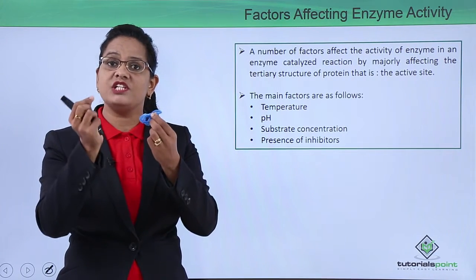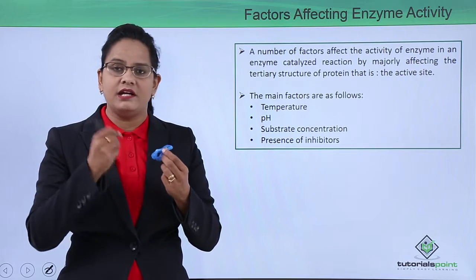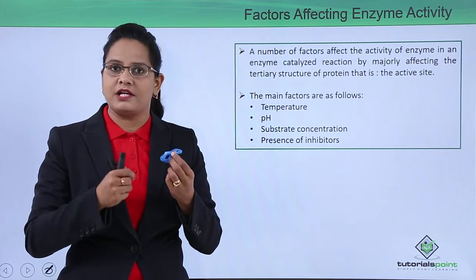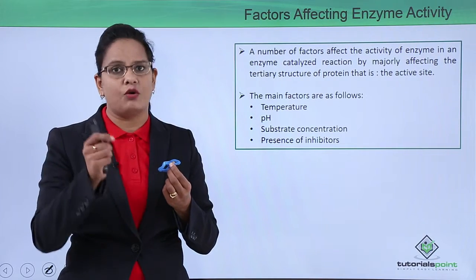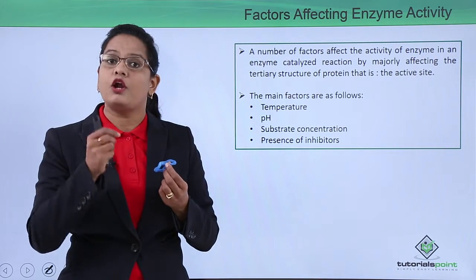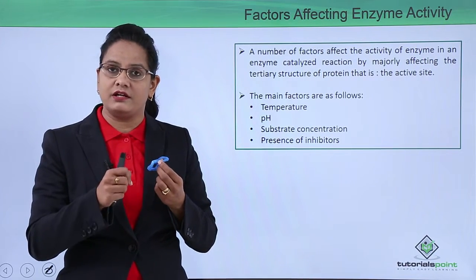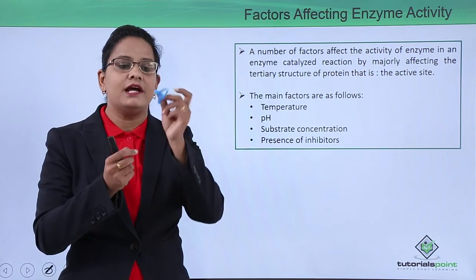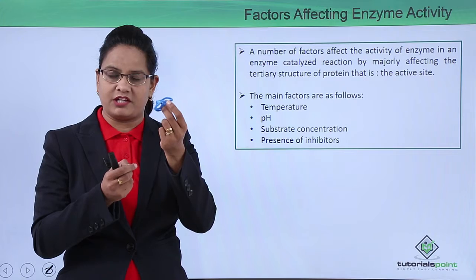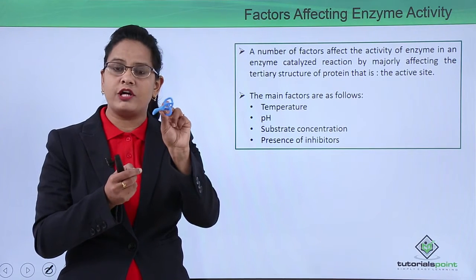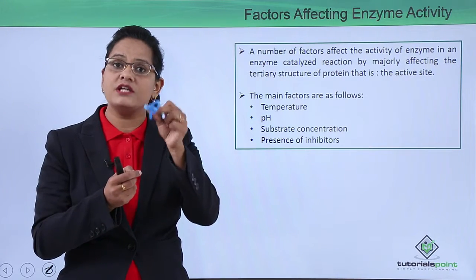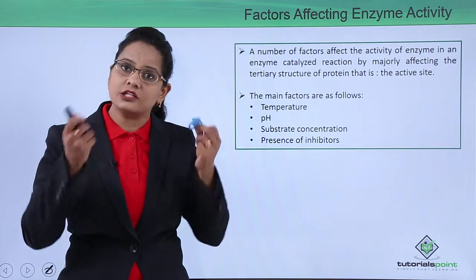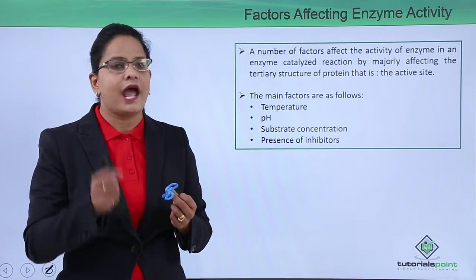Inside the body and inside the cell, we need to maintain a constant temperature and pressure — what is known as homeostasis. If temperature, pH, or any other condition is varied, the structure of the protein will be affected. We will see how this folded protein changes as temperature changes, as pH changes, as substrate concentration changes, and in the presence of inhibitors.